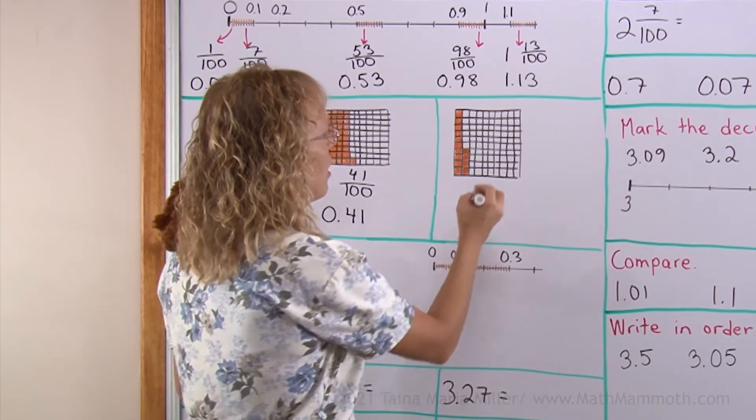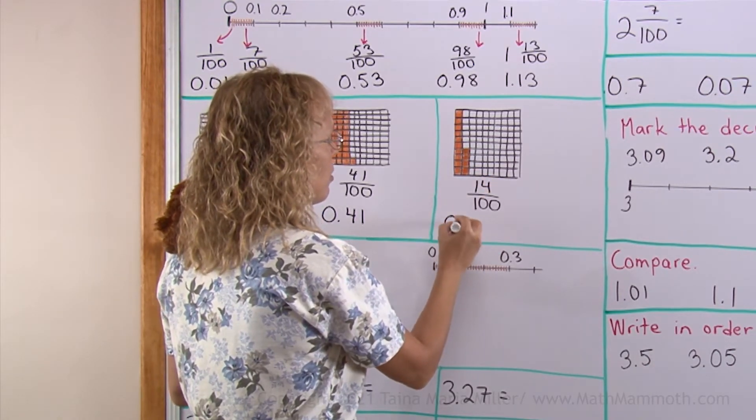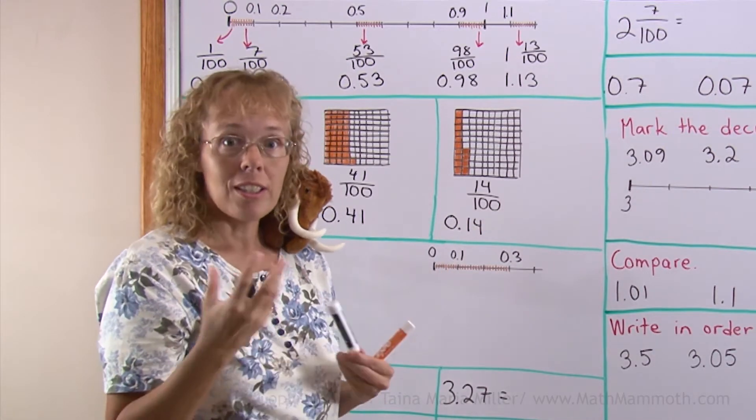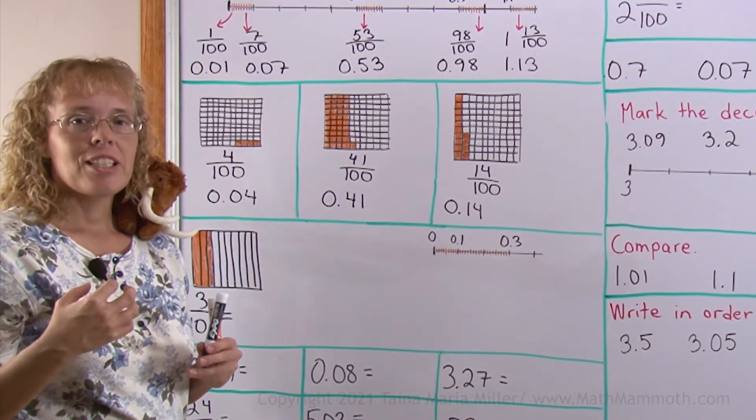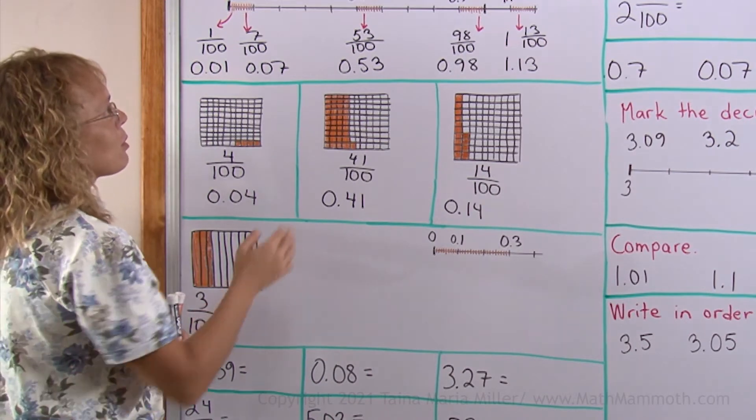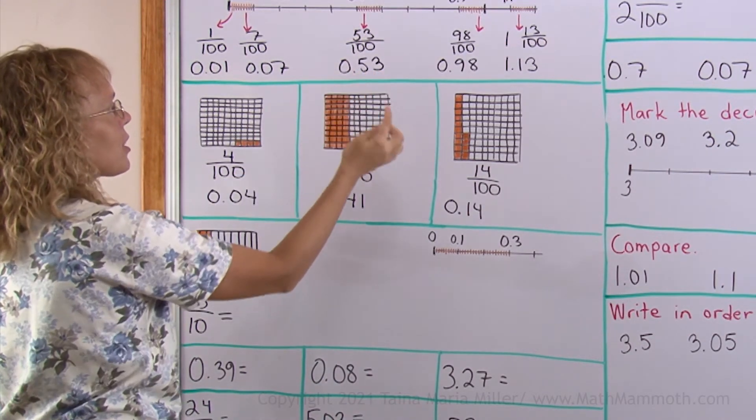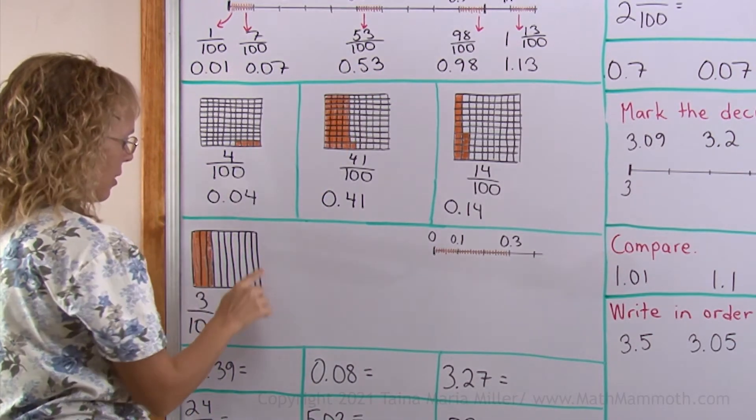Here I have 14 hundredths colored, so it is written as 0.14. 14 hundredths or 0.14. Now, I want to explain again the idea what I was talking about here, how this is both 53 hundredths and 5 tenths and 3 hundredths. But this time we're going to look at this.